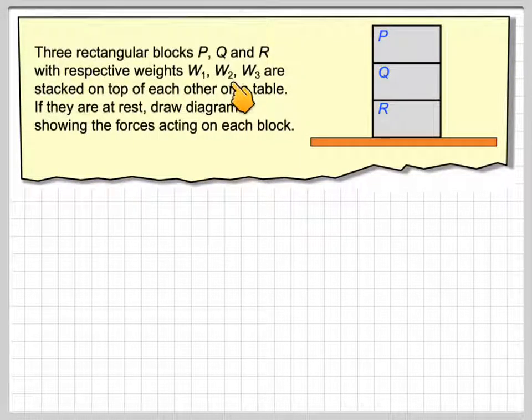Three rectangular blocks, P, Q and R, with respective weights W1, W2 and W3, are stacked on top of each other on a table. If they are at rest, i.e. there's no movement, draw diagrams to show the forces acting on each block.